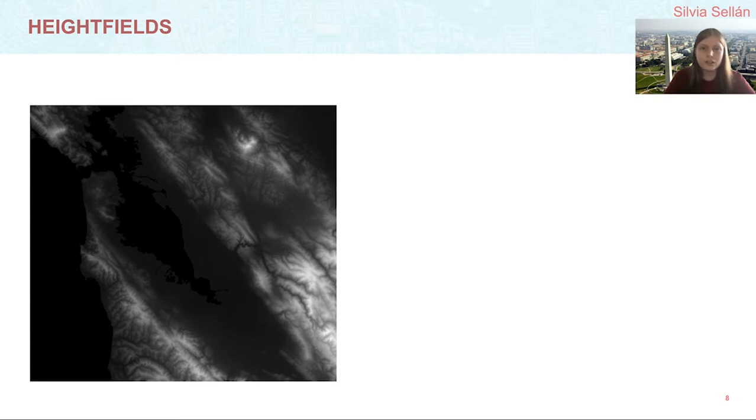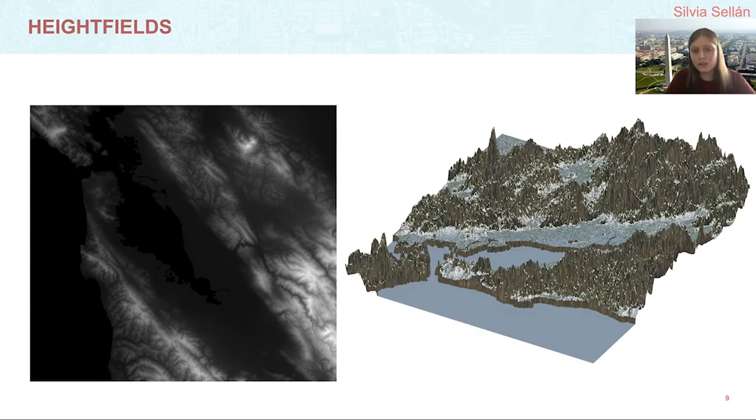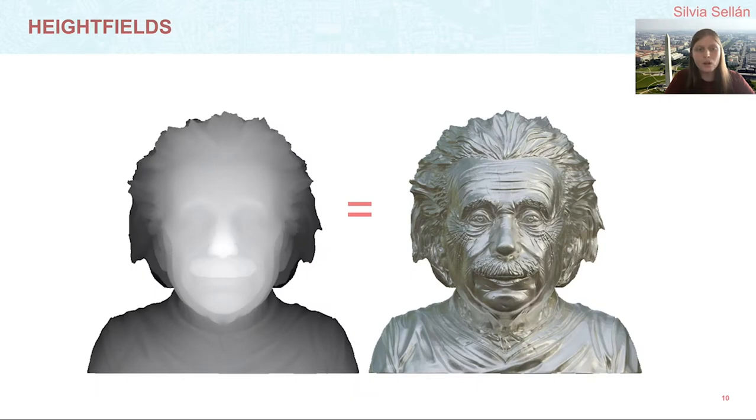On the other hand, a heightfield can be thought of as an image which, instead of the traditional RGB values, stores a single height value for each pixel. The prototypical example is topographical data, in this case of the San Francisco Bay Area.